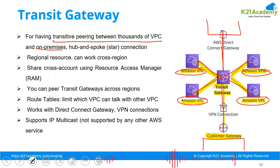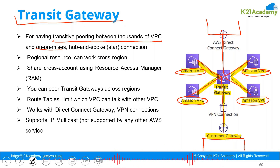To make VPC peerings transitive, Amazon introduced the Transit Gateway service. It is not a single point of failure because it is a fully managed service by Amazon. Although it looks like a single unit to you, in the background redundancy and scaling are already taken care of by Amazon.